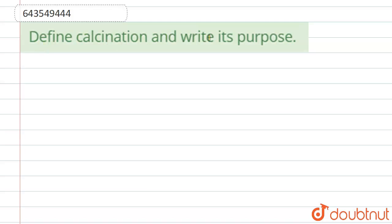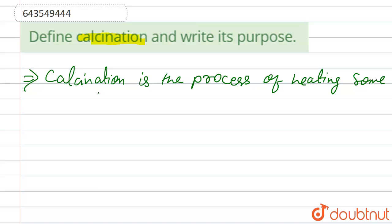Define calcination and write its purpose. We have to define calcination. Our answer is: Calcination is the process of heating some solid materials or a substance in a controlled environment.